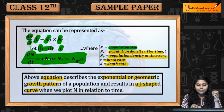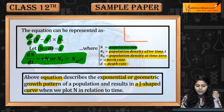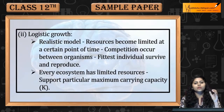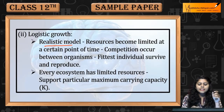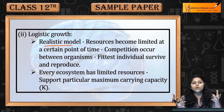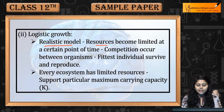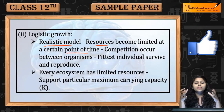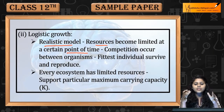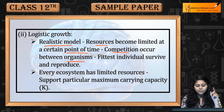Yeh result karega J-shape curve mein jab hum plot karenge N in relation to time — J-shape curve hoga. Next is logistic growth — yeh realistic model hai. Hamare paas limited space aur limited resources hain. At a certain point of time, limited resources ki wajah se individuals mein competition zyada hoti hai.